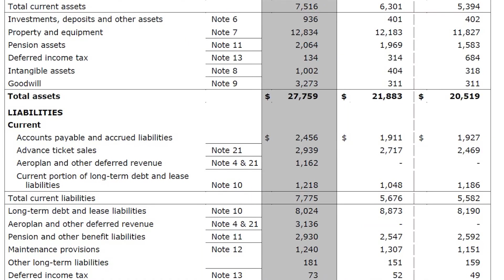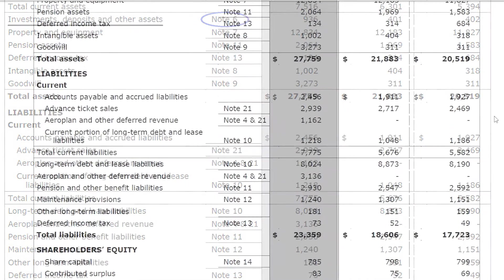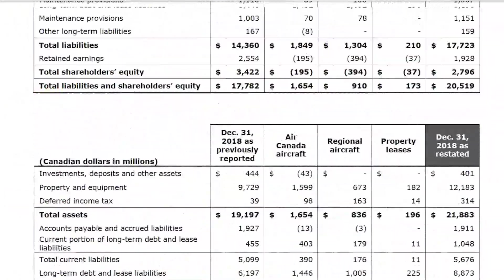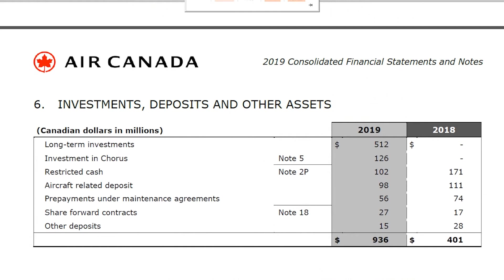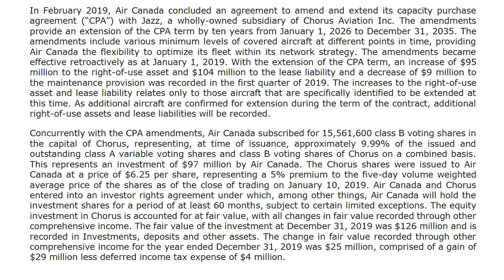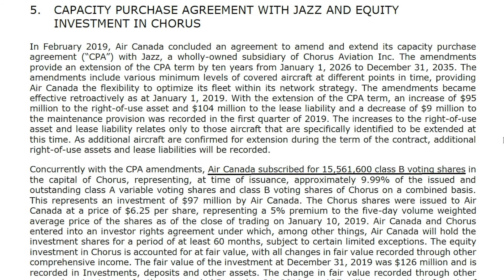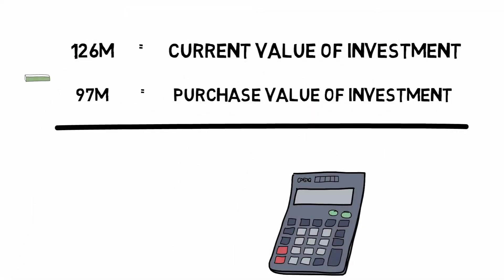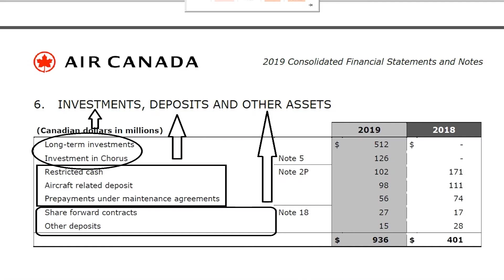Moving on to non-current assets, which have a maturity of more than 12 months. Under investments, deposits and other assets — note 6 — they have 512 million in long-term investments and 126 million in Chorus Aviation. Air Canada bought 15.5 million shares of Chorus Aviation at 6.25 cents each, making an investment of 97 million dollars, which has since grown to 126 million — a profit of 29 million dollars to be reported in shareholders' equity.